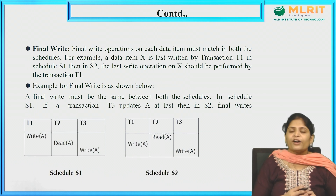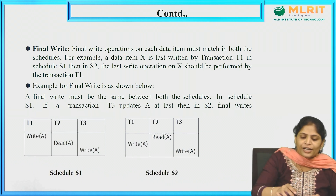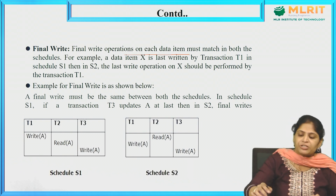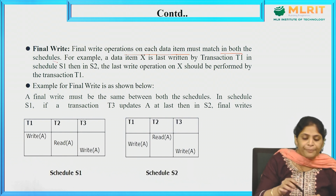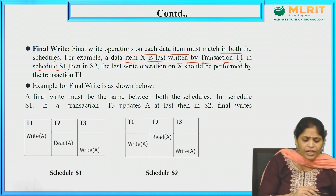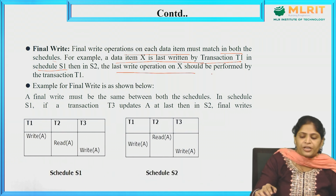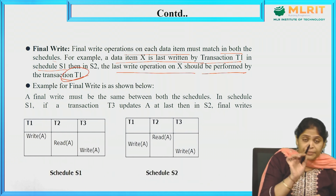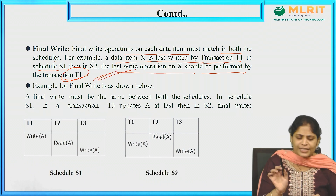What is the final write condition? The final write operation on each data item must match in both schedules. For example, if data item X is last written by transaction T1 in schedule S1, then in S2 also the last operation on X should be performed by the same transaction T1 only.